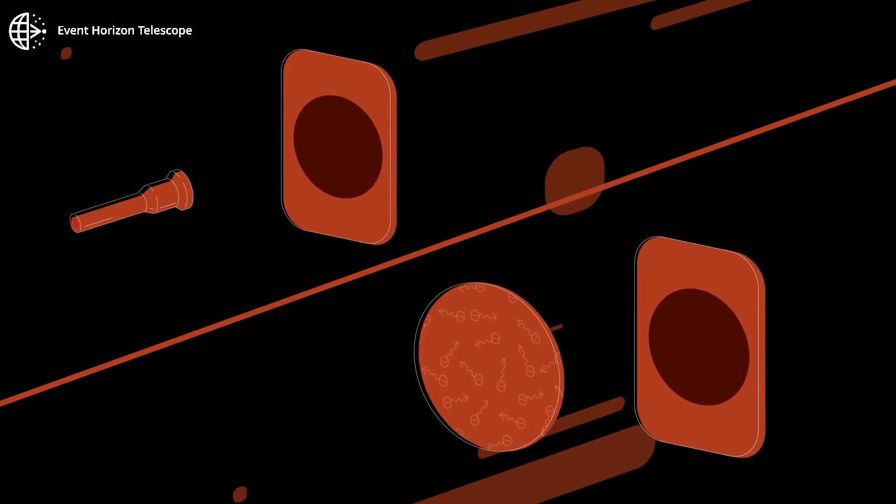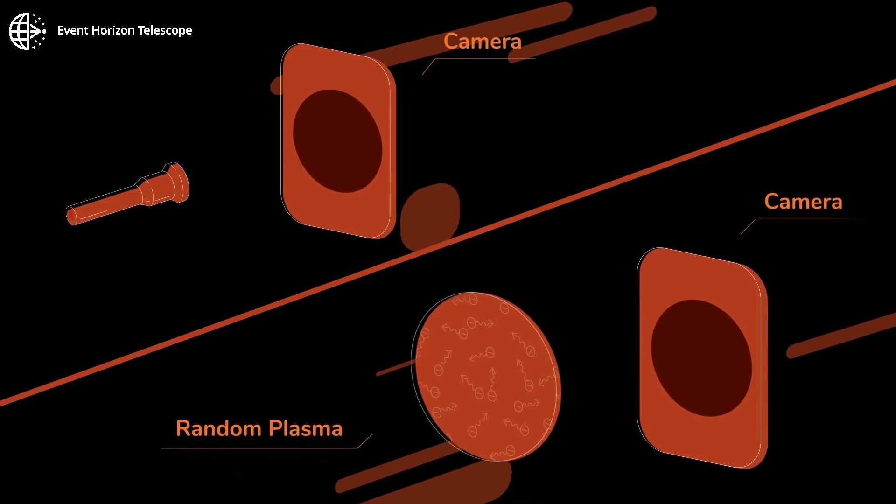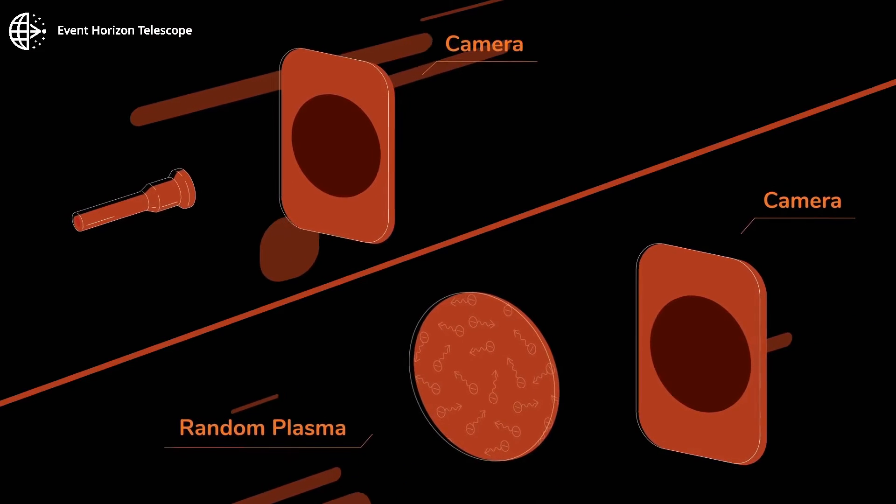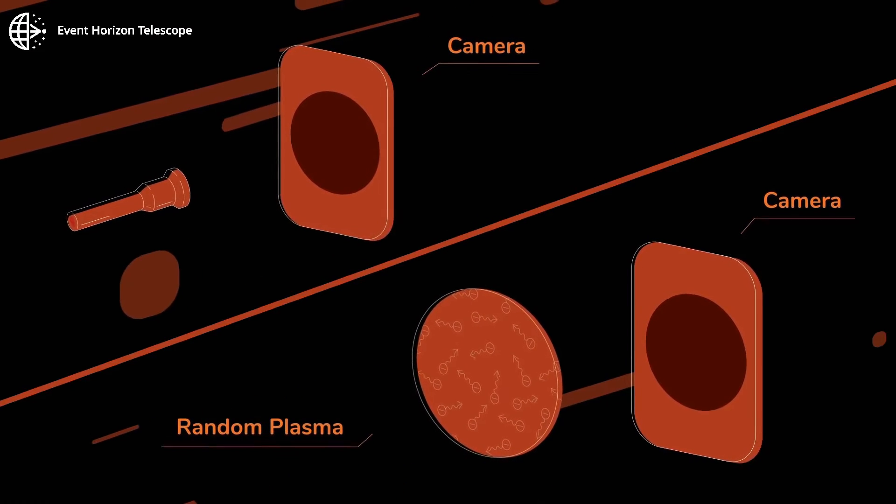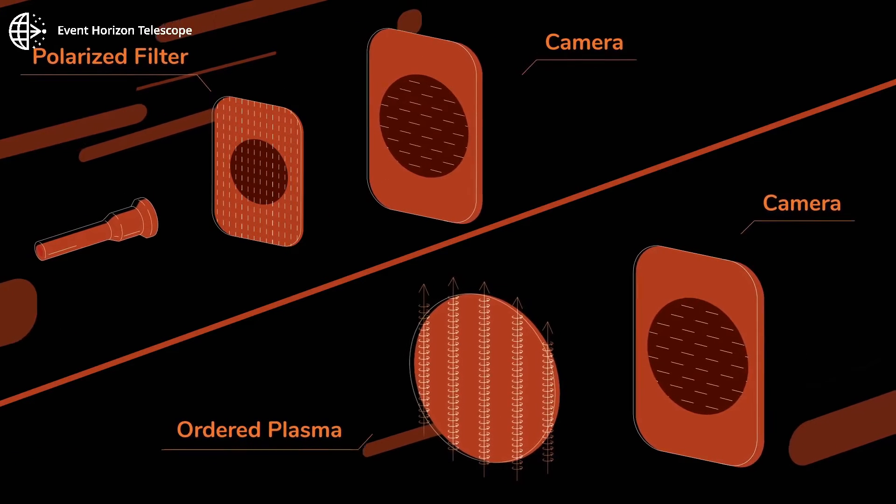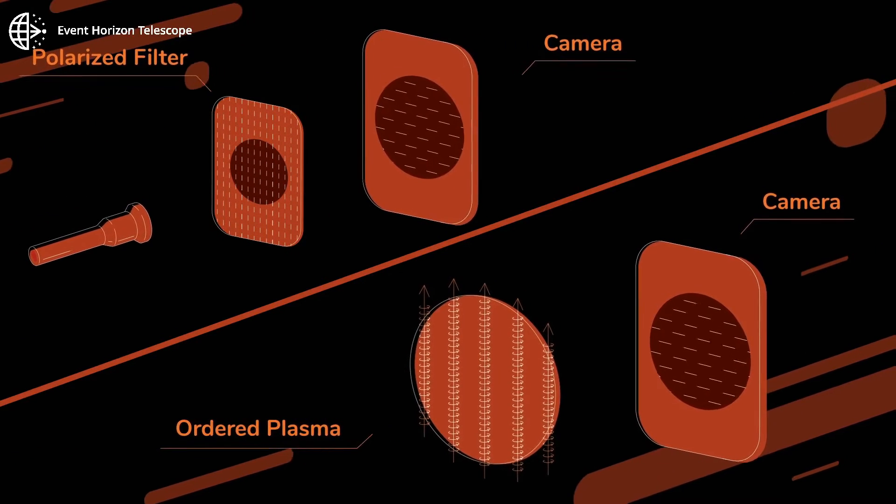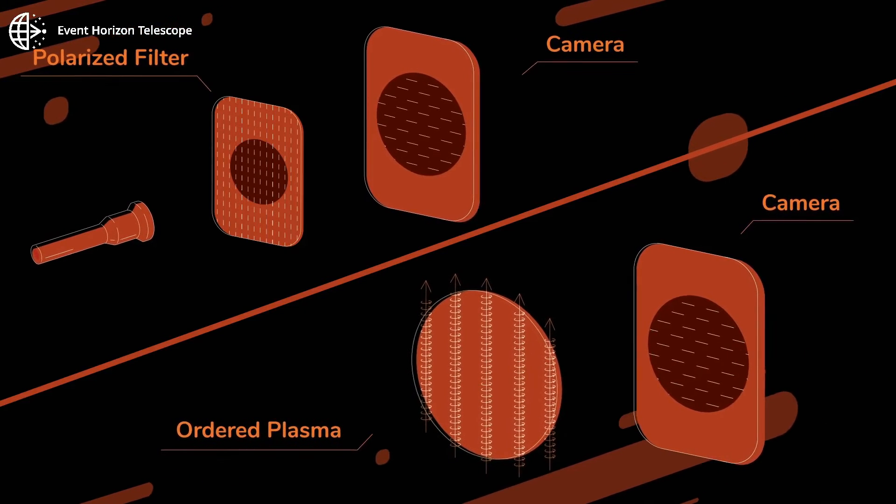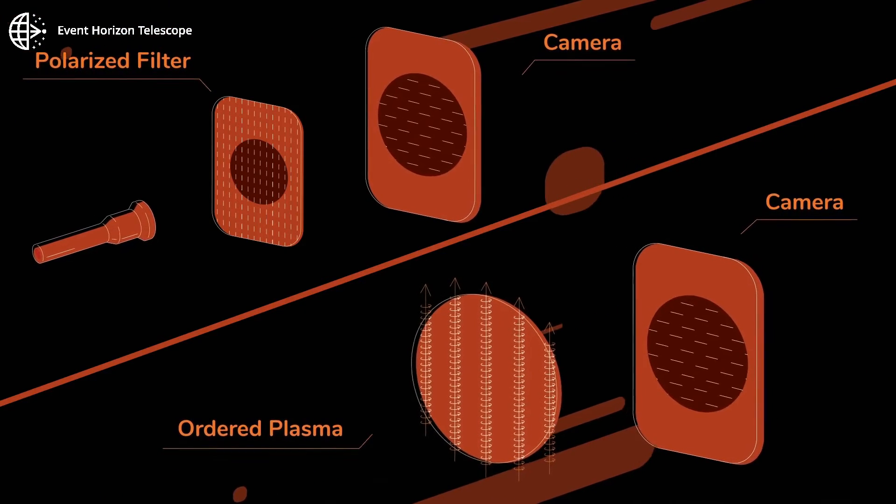In space, randomly moving hot gas or plasma emits unpolarized light, like the torch. Plasma threaded by a magnetic field is ordered and the emitted light is polarized. The magnetic field acts as a polarized filter.